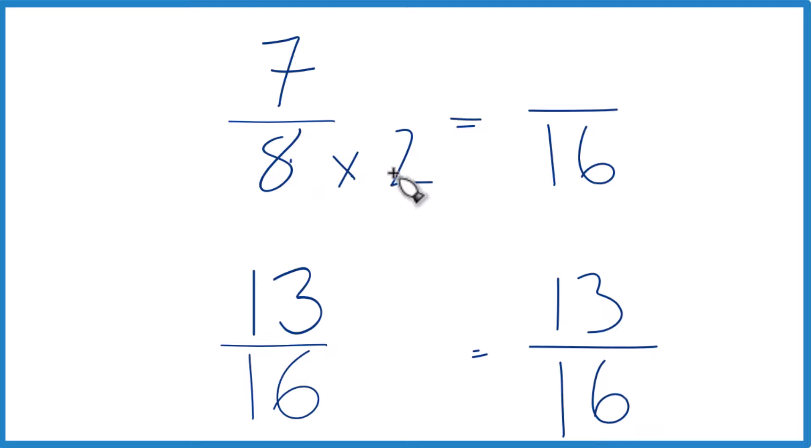And since we multiplied the denominator by 2, let's multiply the numerator by 2. 2 divided by 2 is 1, so we're just multiplying by 1. We don't change the value, just the way it's written. 7 times 2 is 14. 14 sixteenths, that's an equivalent fraction for 7 eighths, they have the same value.